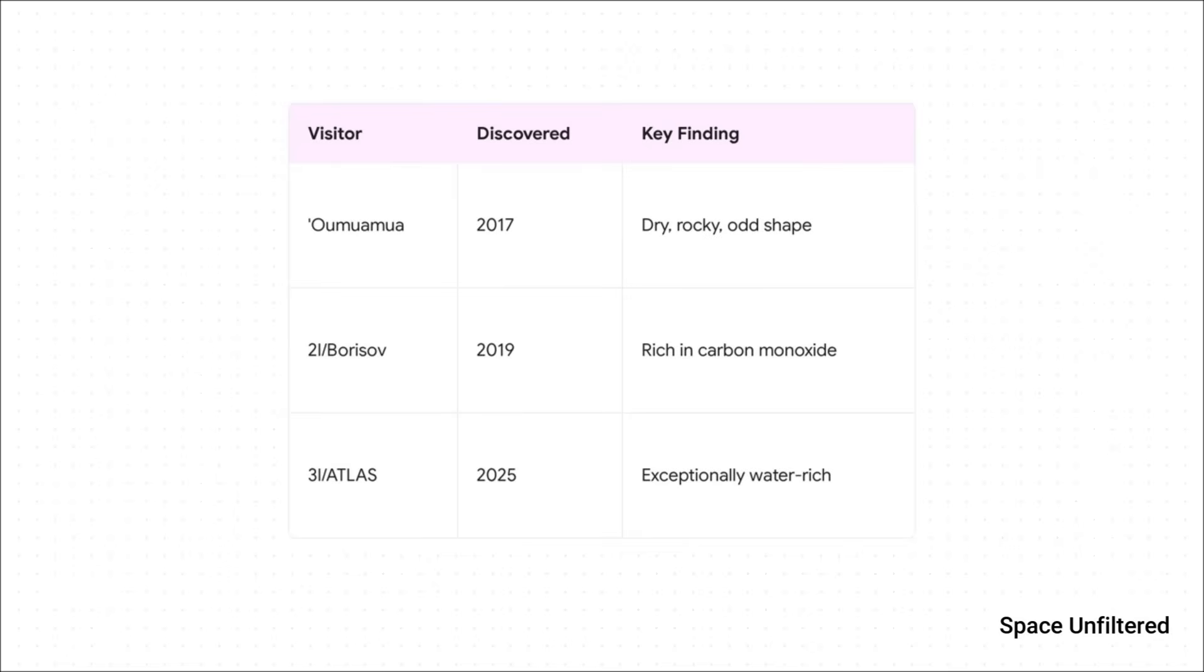Let's just run through them. Our first visitor, Oumuamua, back in 2017, seemed to be a dry, rocky, and really weirdly shaped object. Then came 2I/Borisov in 2019, which was packed with carbon monoxide. And now we have 3I/ATLAS, which is proving to be incredibly rich in water. They are all completely different from each other.